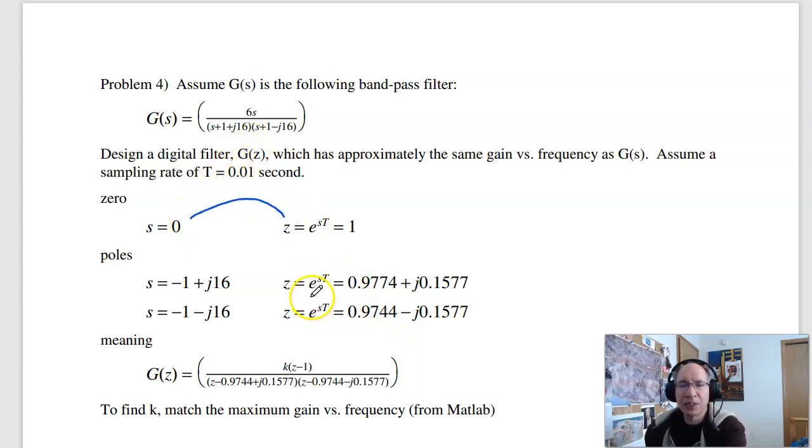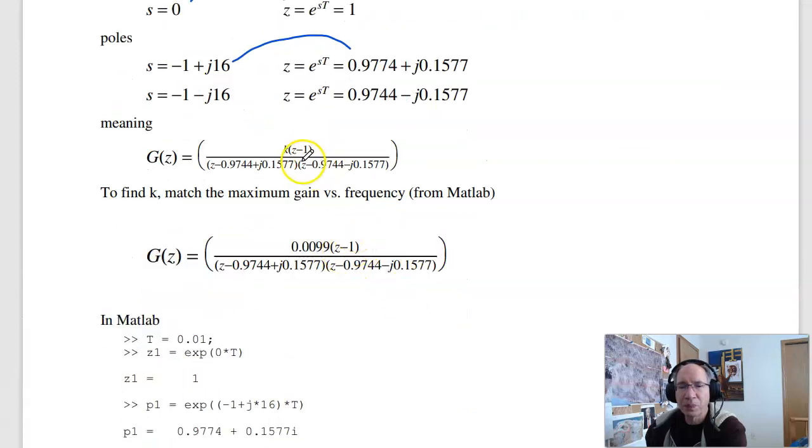I've got a zero at s equals zero. That means I should have zero at z is plus one. I've got poles at minus one, plus or minus j16. In the z-plane, I've got poles at 0.9774, plus or minus j0.1577. Z-plane, you need a lot of decimal places. These are really sensitive to rounding. So this is my filter.